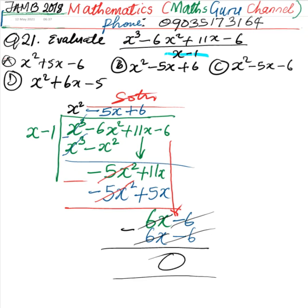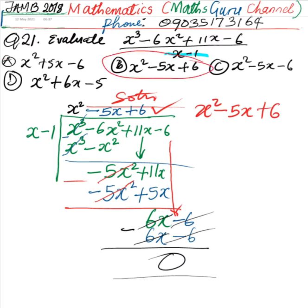So everything is 0 here. Our correct answer is x squared minus 5x plus 6, and the option that agrees with this is B. Please don't forget to subscribe. Thank you.